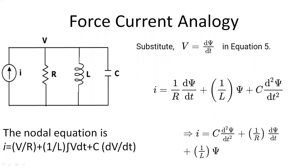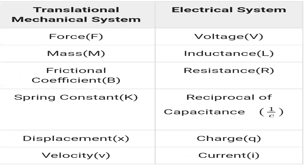Comparing the translational mechanical system equation with this nodal electrical equation, we get: force is analogous to current, mass is analogous to capacitance, frictional coefficient b is analogous to reciprocal of resistance, spring constant is analogous to reciprocal of inductance, displacement is analogous to magnetic flux, and velocity is analogous to voltage.